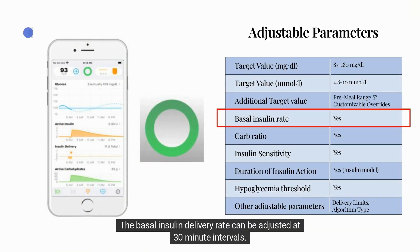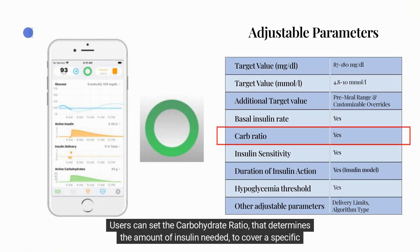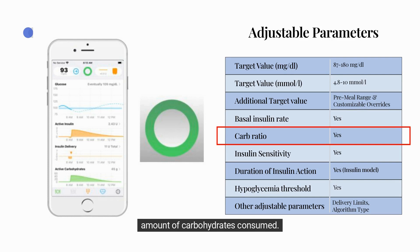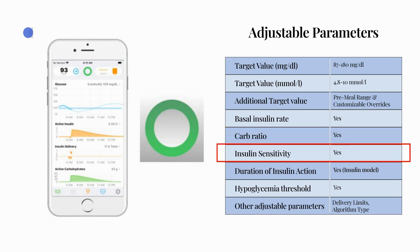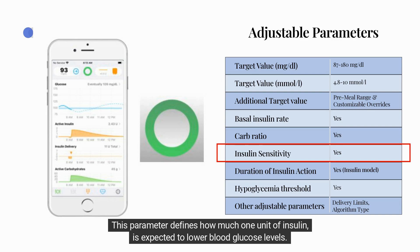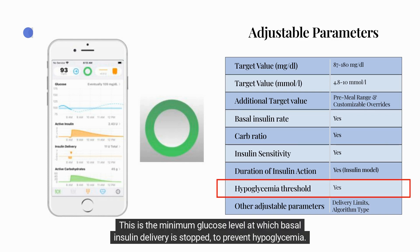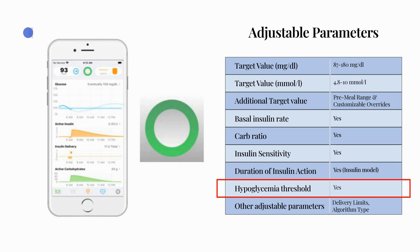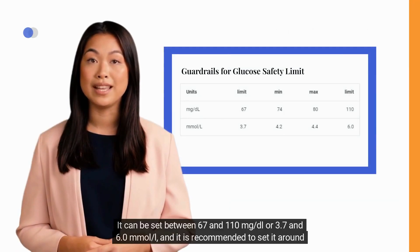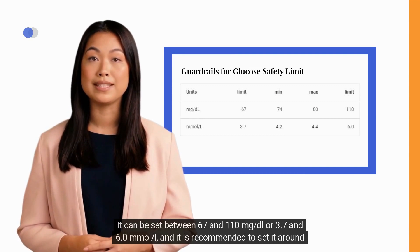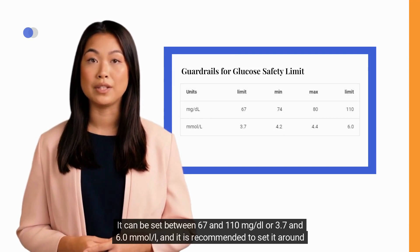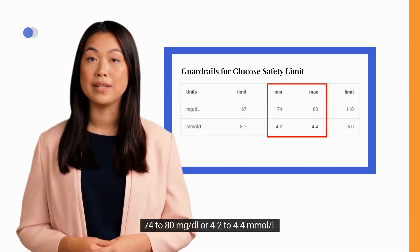The basal insulin delivery rate can be adjusted at 30-minute intervals. Users can set the carbohydrate ratio, which determines the amount of insulin needed to cover a specific amount of carbohydrates consumed, and the insulin sensitivity factor, which defines how much one unit of insulin is expected to lower blood glucose levels. The glucose safety limit can also be adjusted — the minimum glucose level at which basal delivery stops to prevent hypoglycemia — recommended to be set around 74 to 80 mg/dL or 4.2 to 4.4 mmol/L.